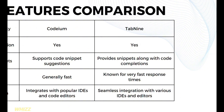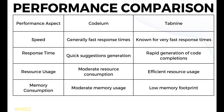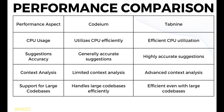Moving on to the performance comparison. In terms of speed, Codium has generally fast response times, while Tab9 is known for very fast response times. For response time, Codium offers quick suggestions generation, while Tab9 provides rapid generation of code completions. In terms of resource usage, Codium has moderate resource consumption, while Tab9 has efficient resource usage. For memory consumption, Codium has moderate memory usage, while Tab9 has a low memory footprint. In terms of CPU usage, Codium utilizes CPU efficiently, while Tab9 also offers efficient CPU utilization.